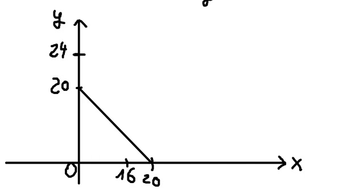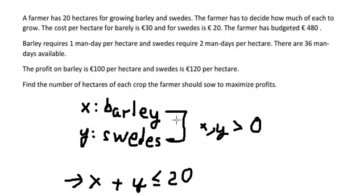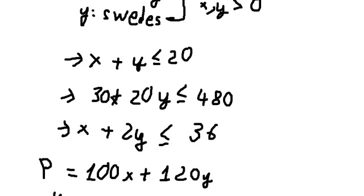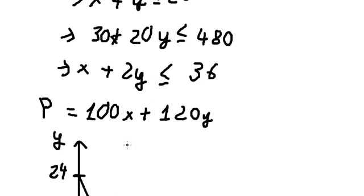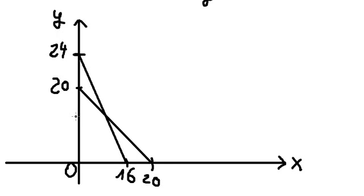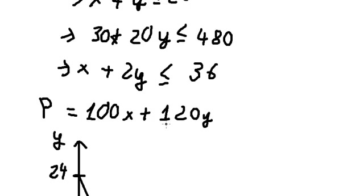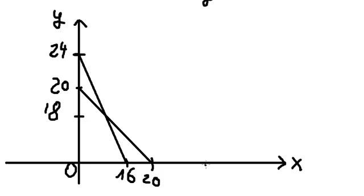We connect the two points — this is the second line. For the last constraint, when x equals zero, 2y equals 36, so dividing by 2 gives y equals 18. And when y equals zero, x equals 36.